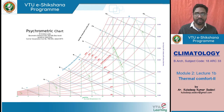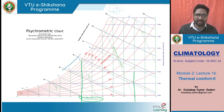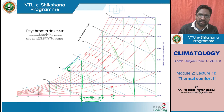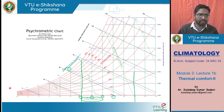Let us see what lines are covered in this psychrometric chart. We know we have six parameters to be depicted in one single chart. First, dry bulb temperature — the green vertical lines represent dry bulb temperature. Any vertical line is a dry bulb temperature line: 20, 25, 30, 35 degrees centigrade. Then we have wet bulb temperature — the blue color slant lines represent wet bulb temperature, at saturation degrees centigrade. For example, this is 15 degrees centigrade at saturation. The blue color lines going diagonally are wet bulb temperature lines.